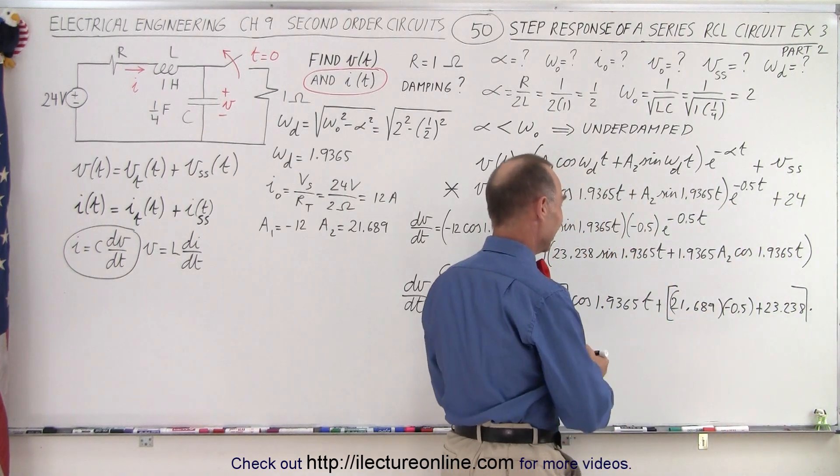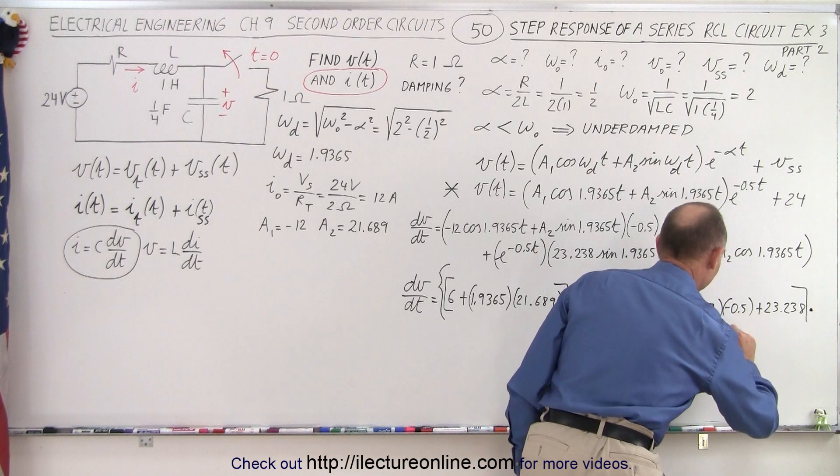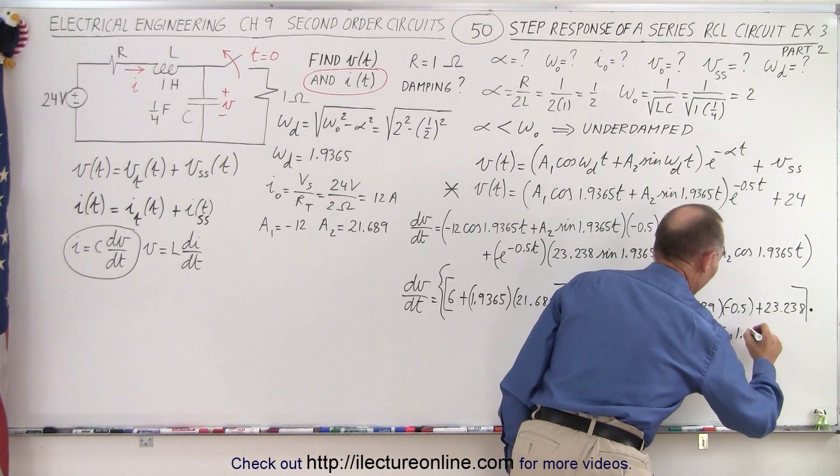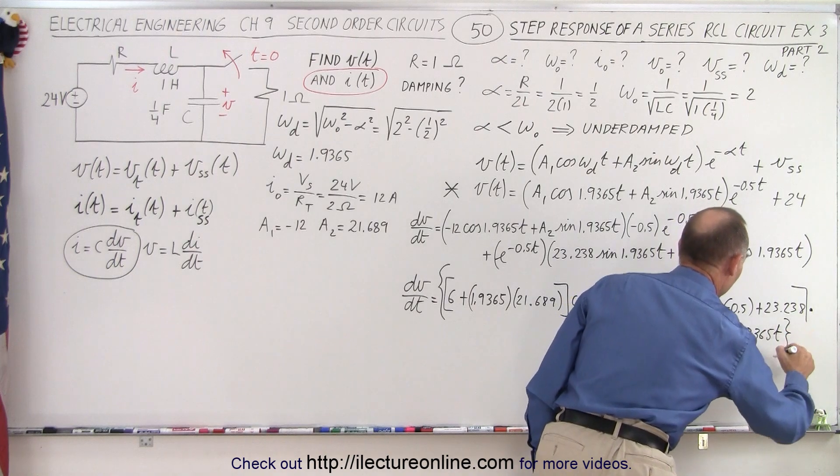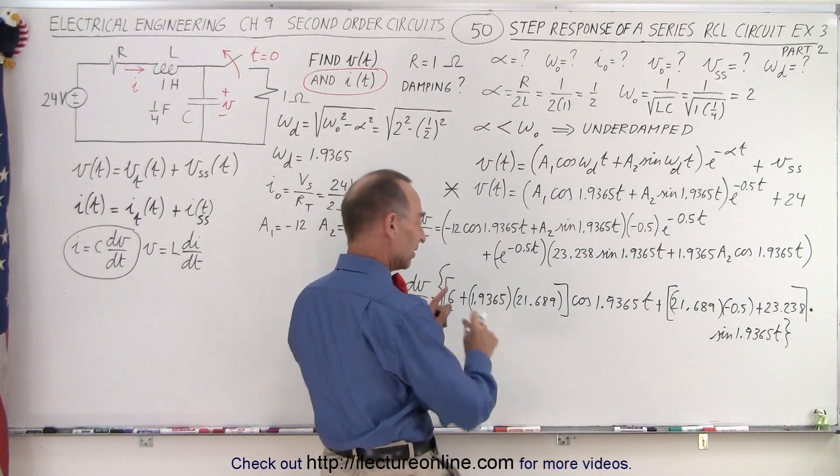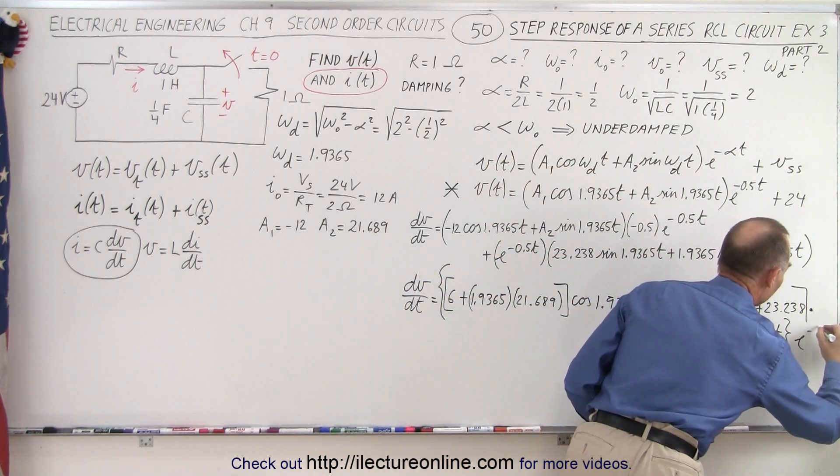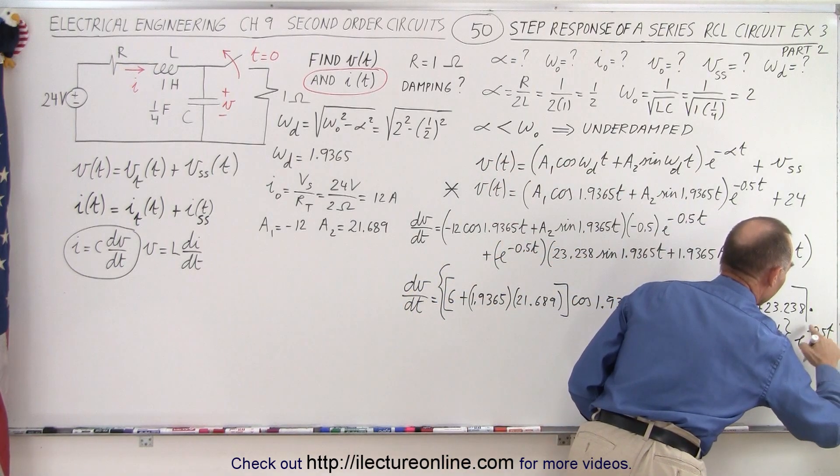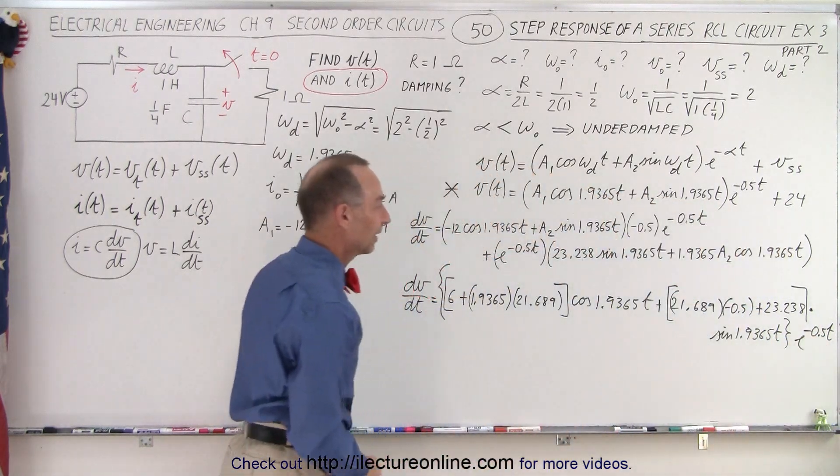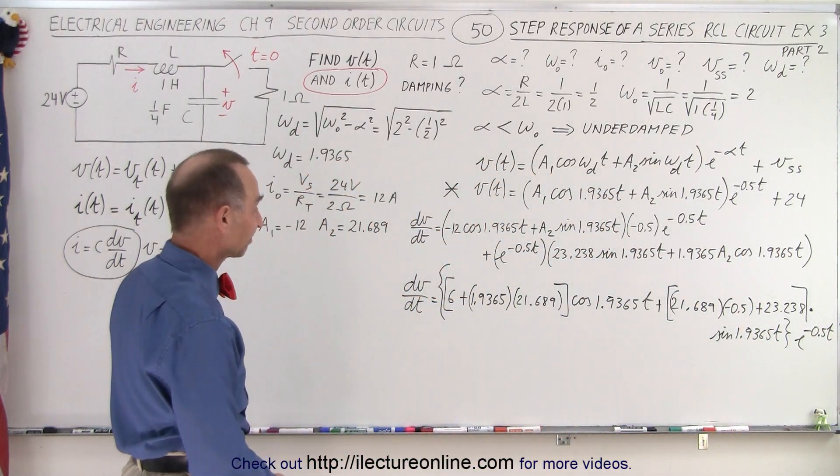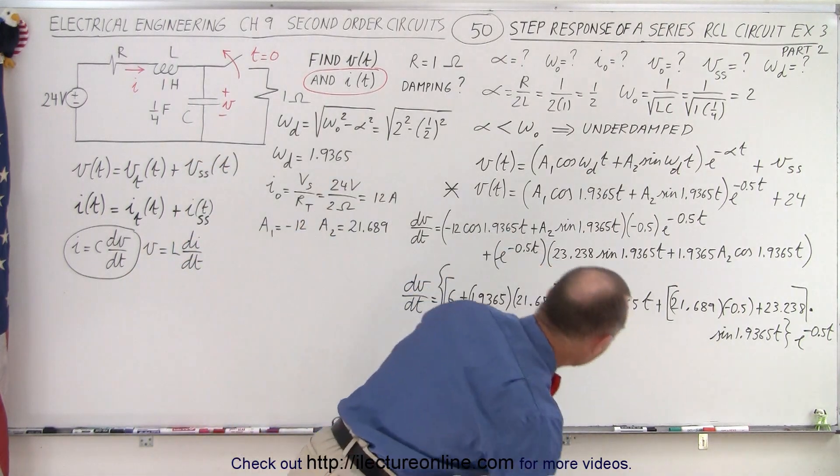I was trying to be lazy, and lazy doesn't help. So, that is times the sine of 1.9365t, that closes the parentheses from here, and then the whole thing is multiplied by the exponent, e to the minus 0.5t. There we go. A little bit better.